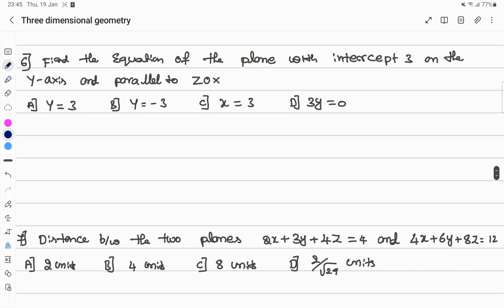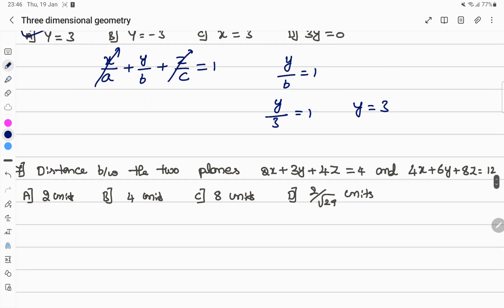Next. Find the equation of plane with intercepts 3 on y-axis. This plane intersects the y-axis and is parallel to the x and z axes. Equation of plane in intercept form is x by a plus y by b plus z by c equals 1. This plane is parallel to x and z axes, so those components are not there. We have y by b equals 1. Intercepts on y-axis is 3, so y by 3 equals 1. Then y equals 3. Option A is the answer.